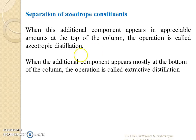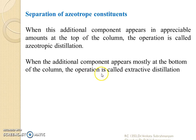How do you separate these azeotropes? Azeotropes can be separated by addition of a third component called the entrainer. When this third component appears appreciably at the top of the column, the operation is called azeotropic distillation. When the entrainer component appears mostly at the bottom of the column, the operation is called extractive distillation.